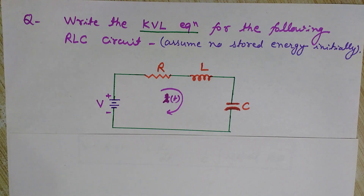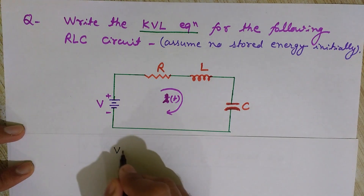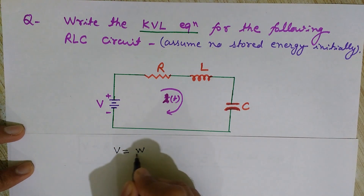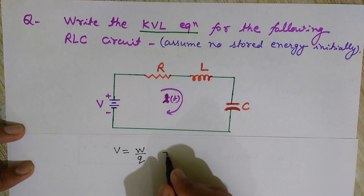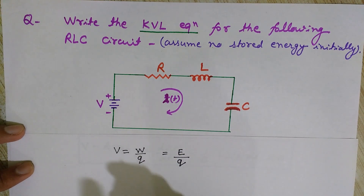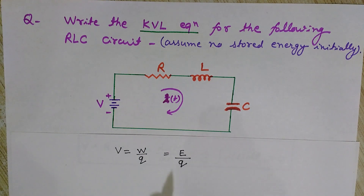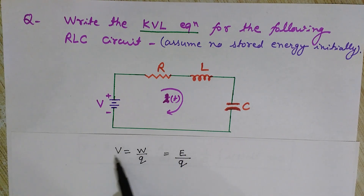Actually, Kirchhoff's voltage law is based on the conservation of energy. How is it based on conservation of energy? As we know, voltage V equals W divided by Q, where W is work and Q is the charge. Work is in the form of energy, so it is E divided by Q. Since the algebraic summation of energy gained or lost must be zero, the algebraic summation of voltage should also be equal to zero.